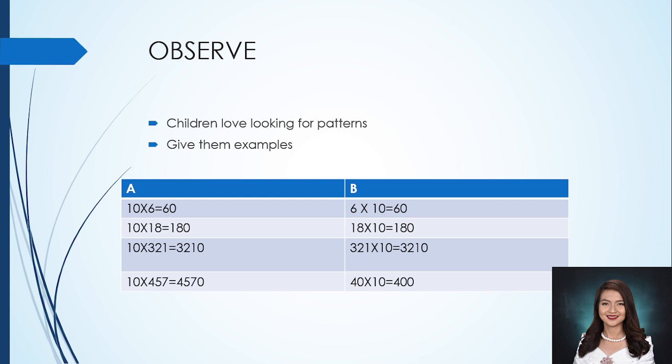However, the variety of examples in set B allows students to establish that the rule works even when changing 10 and the other factor. For example, we have 18 multiplied by 10, and the answer is 180. So with 18, we're just going to add 0 to make it 180 if we are going to multiply it by 10.